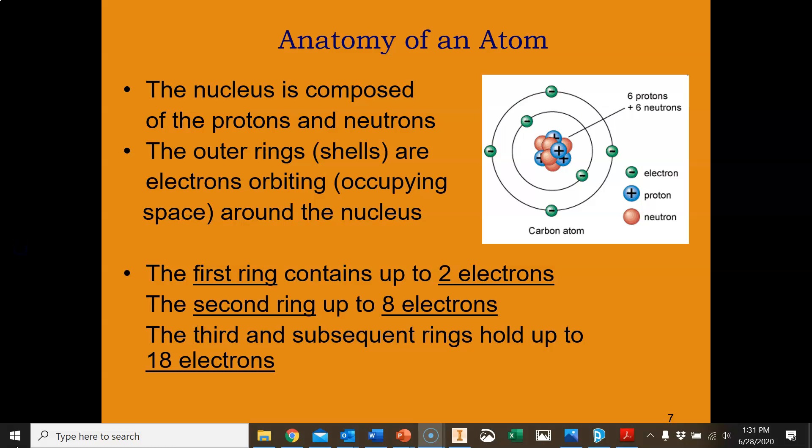Anatomy of an atom. The nucleus is composed of the protons and neutrons. The outer rings or shells are electrons orbiting, which means occupying space around the nucleus. The first ring can contain up to two electrons. The second ring can contain up to eight electrons. The third and subsequent rings can hold up to 18 electrons.